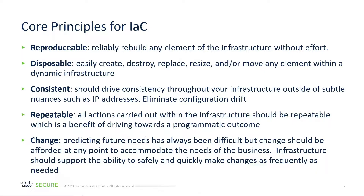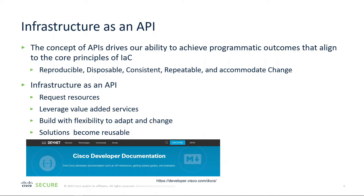Change is also a core principle. Predicting future needs has always been very difficult, but change should be afforded at any point to accommodate the needs of the business. Infrastructure should support the ability to safely and quickly make changes as frequently as needed. You've got to think about infrastructure as an API — the concepts of API drive our ability to achieve programmatic outcomes that align to these core principles: reproducible, disposable, consistent, repeatable, and accommodate change.